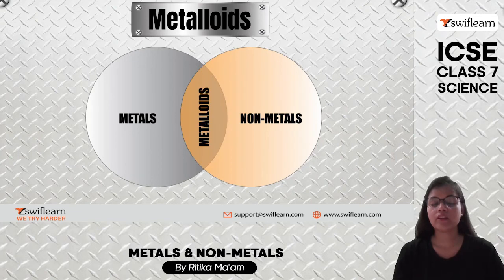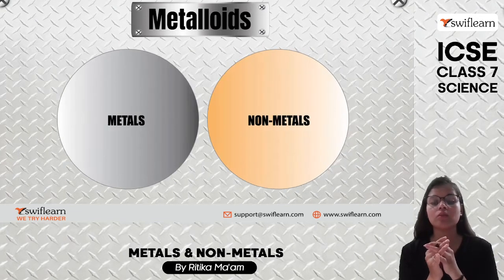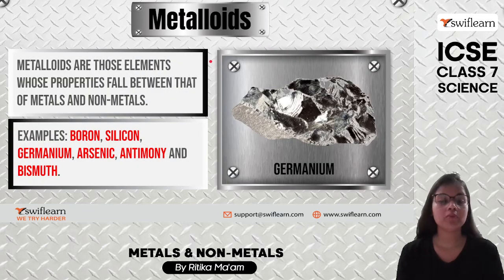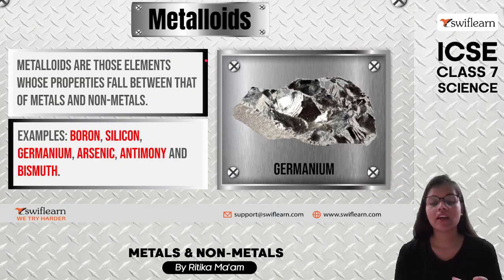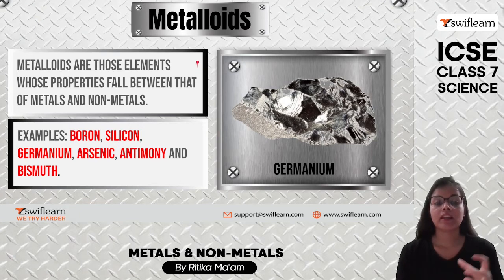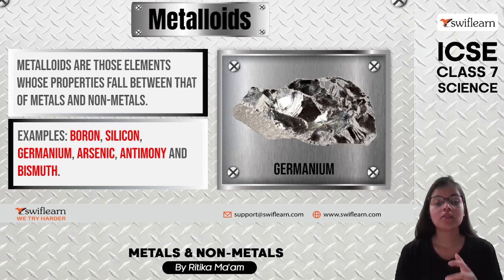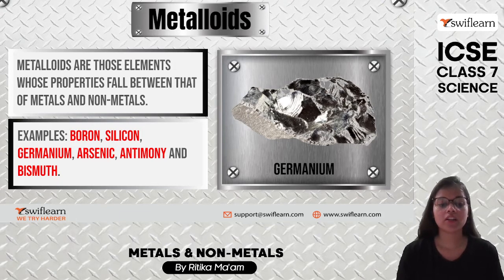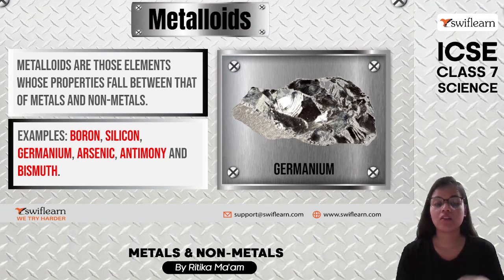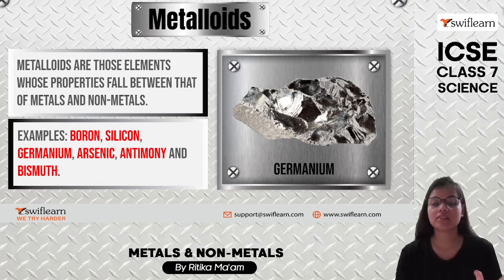What are metalloids? When we take a metal and mix it with a non-metal, it forms what is known as a metalloid. Metalloids are elements whose properties fall between metals and non-metals. Examples of metalloids include germanium, arsenic, antimony, bismuth, boron, and silicon.